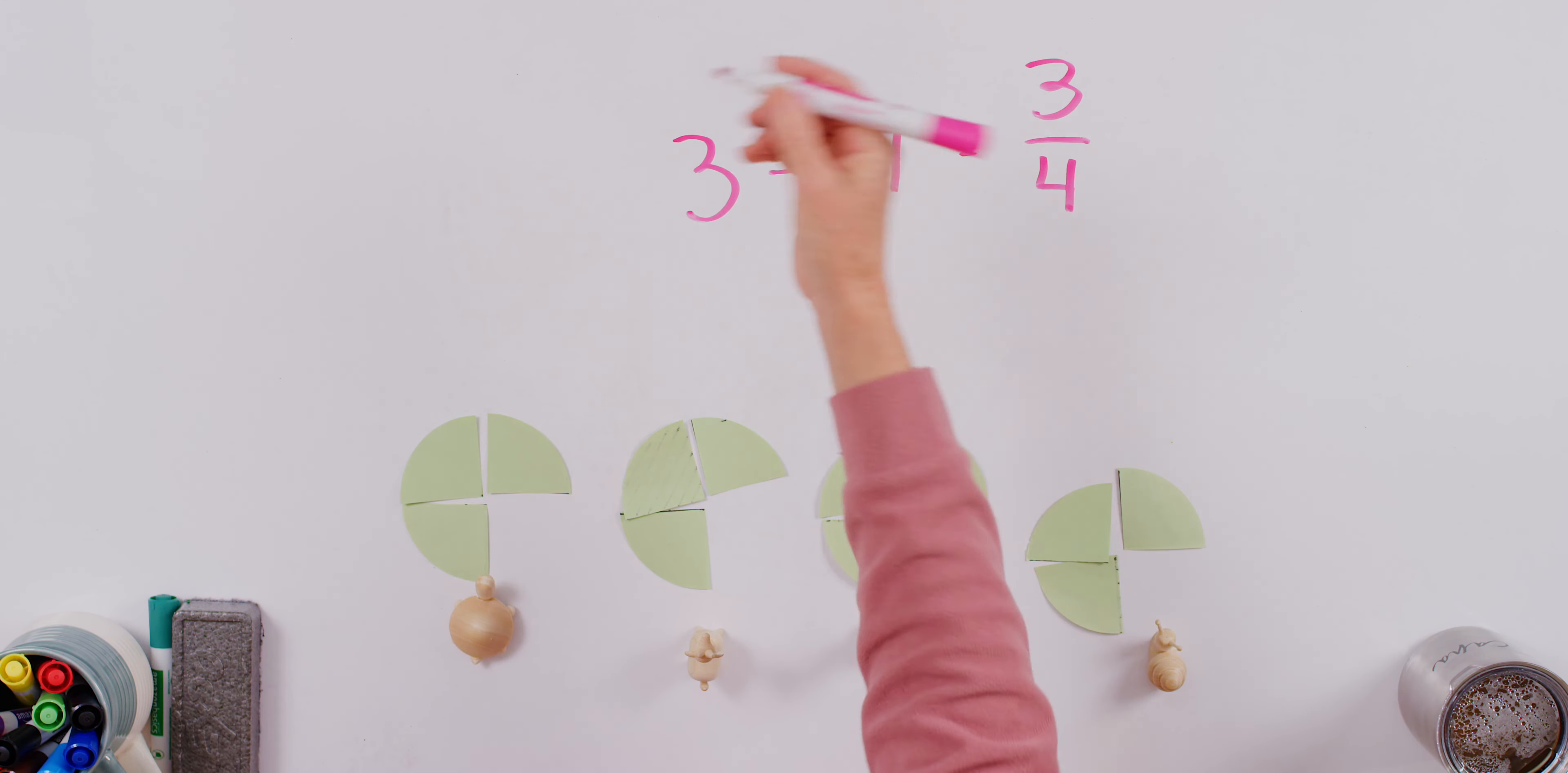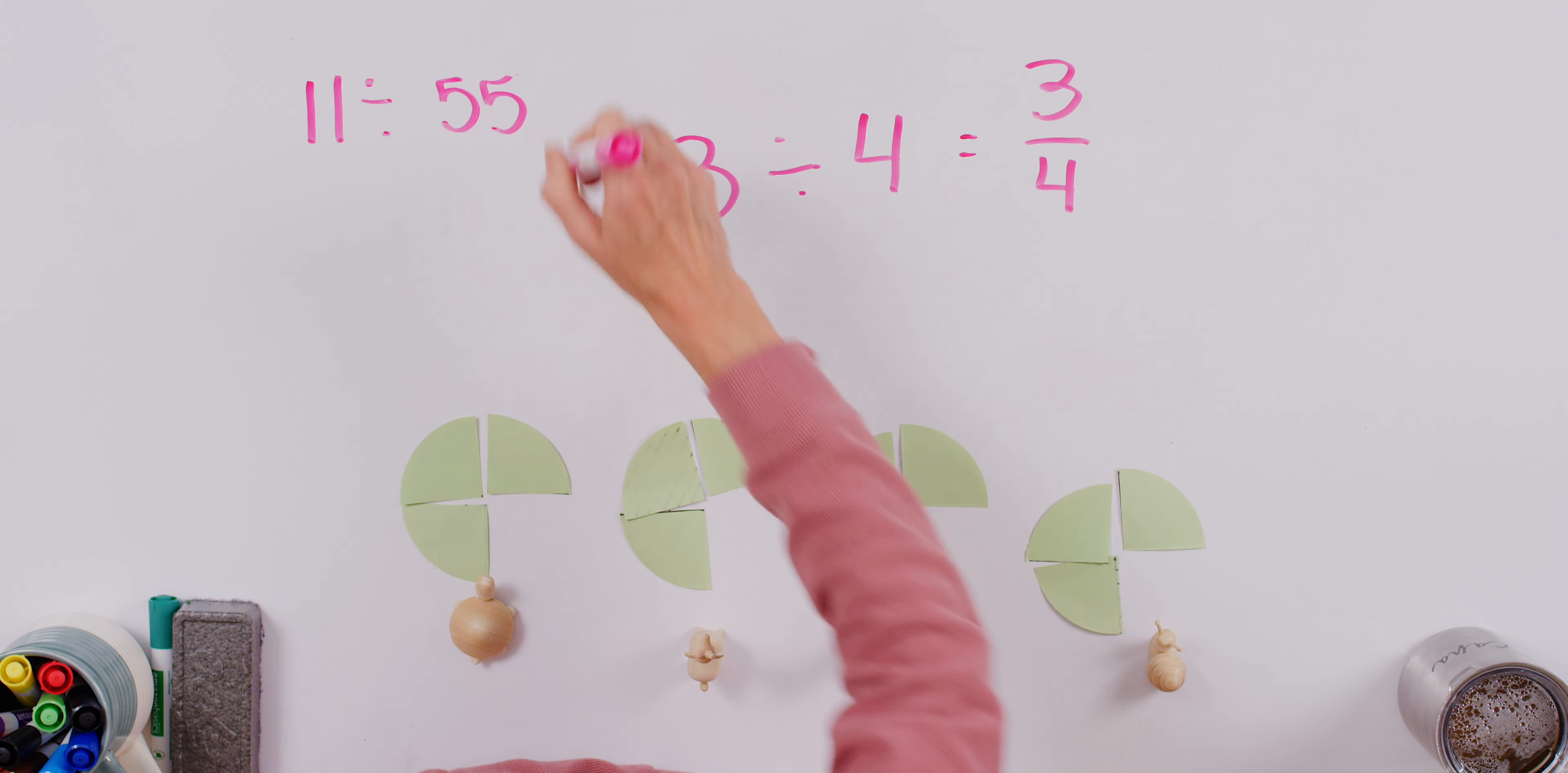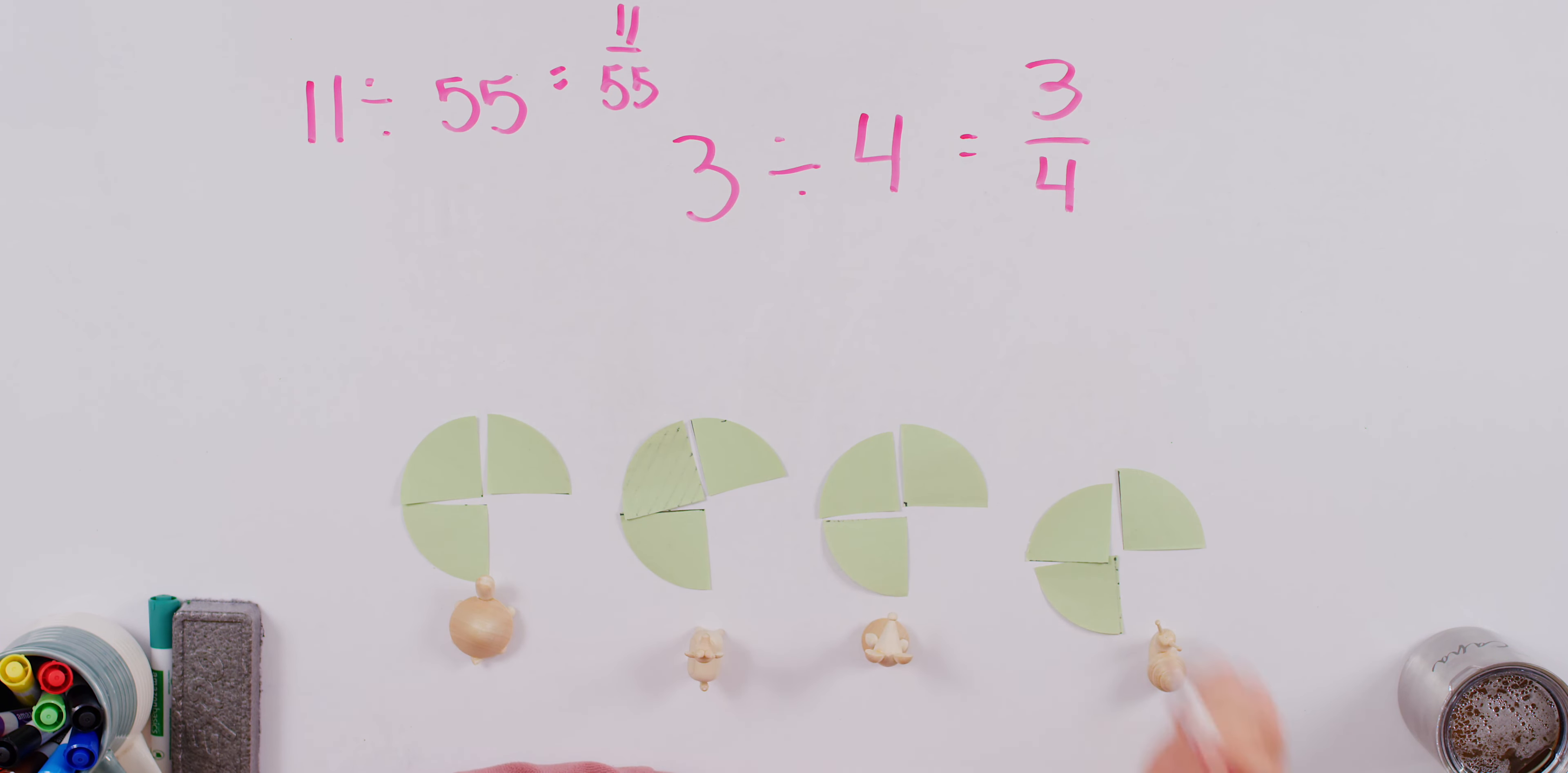Anything that I write, I could say, you know, eleven divided by fifty five. Another way for me to say that is eleven fifty fifths. Or I could say two divided by six. And another way for me to say that is two sixths.